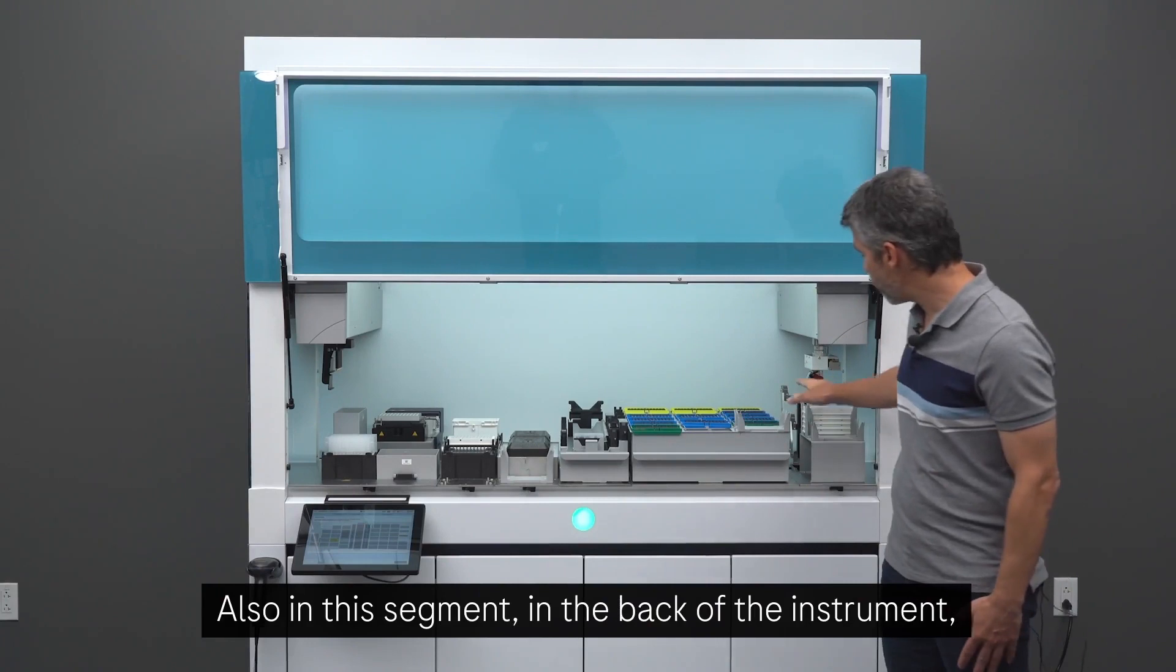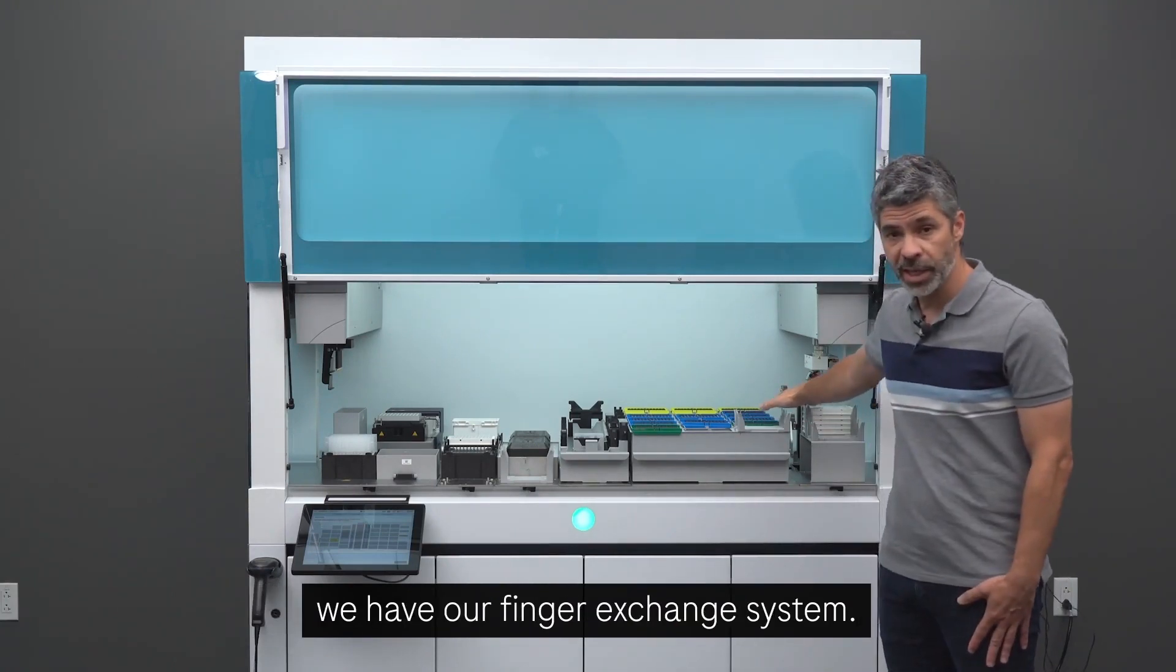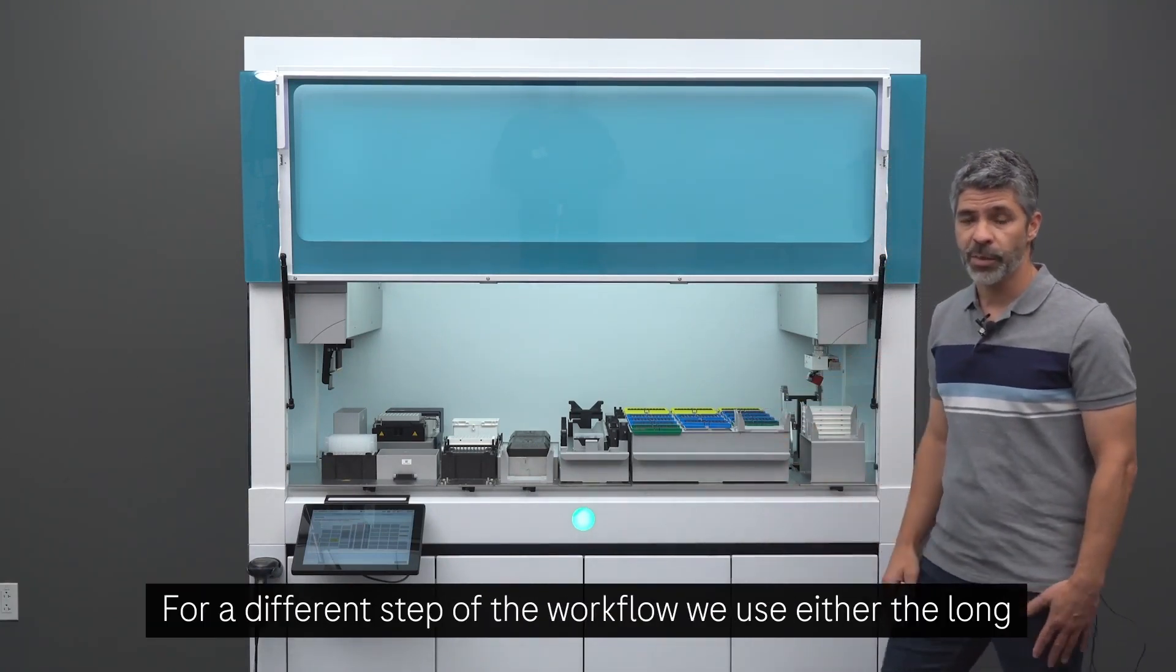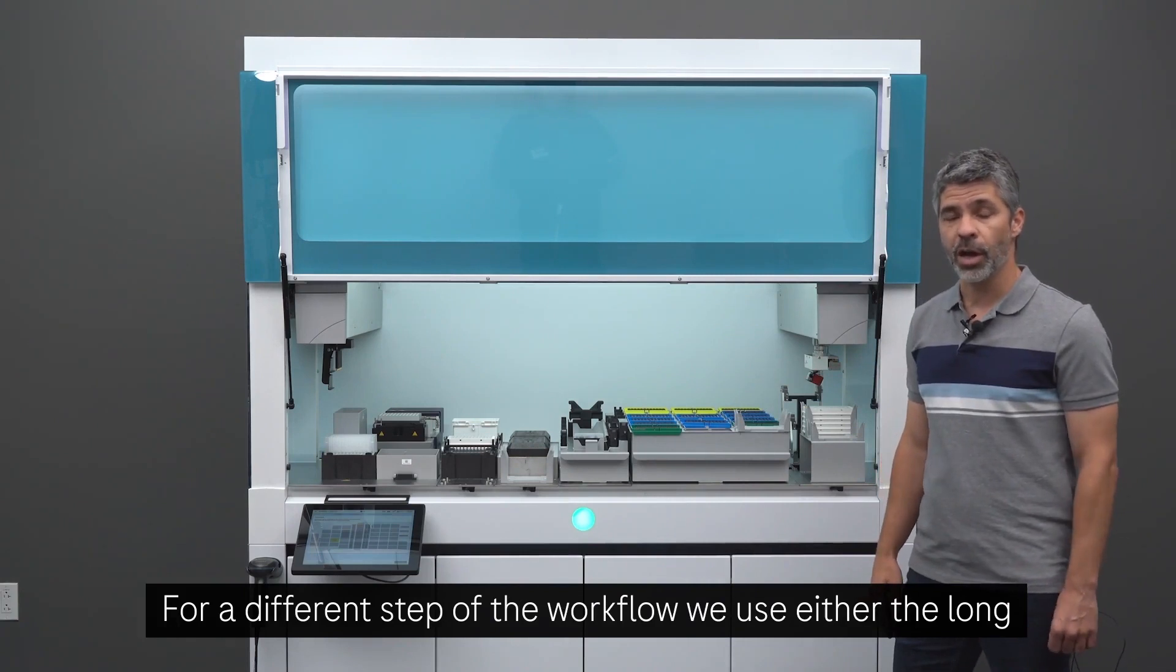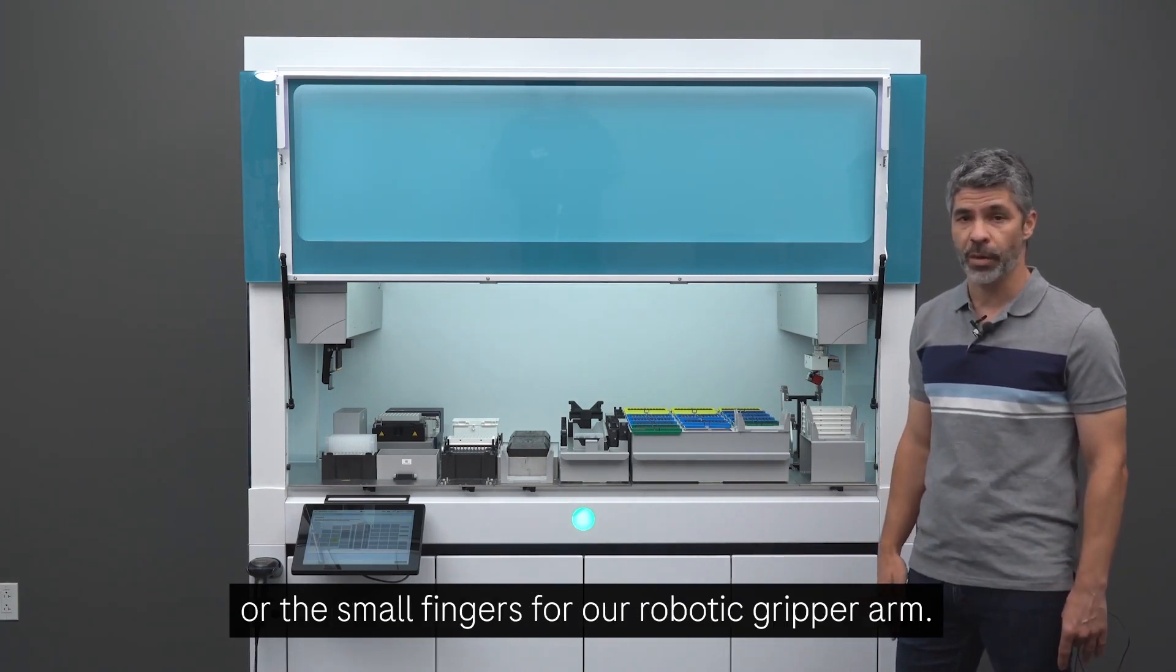Also in this segment, in the back of the instrument, we have our finger exchange system. For the different steps of the workflow, we use either the long or the small fingers for our robotic gripper arm.